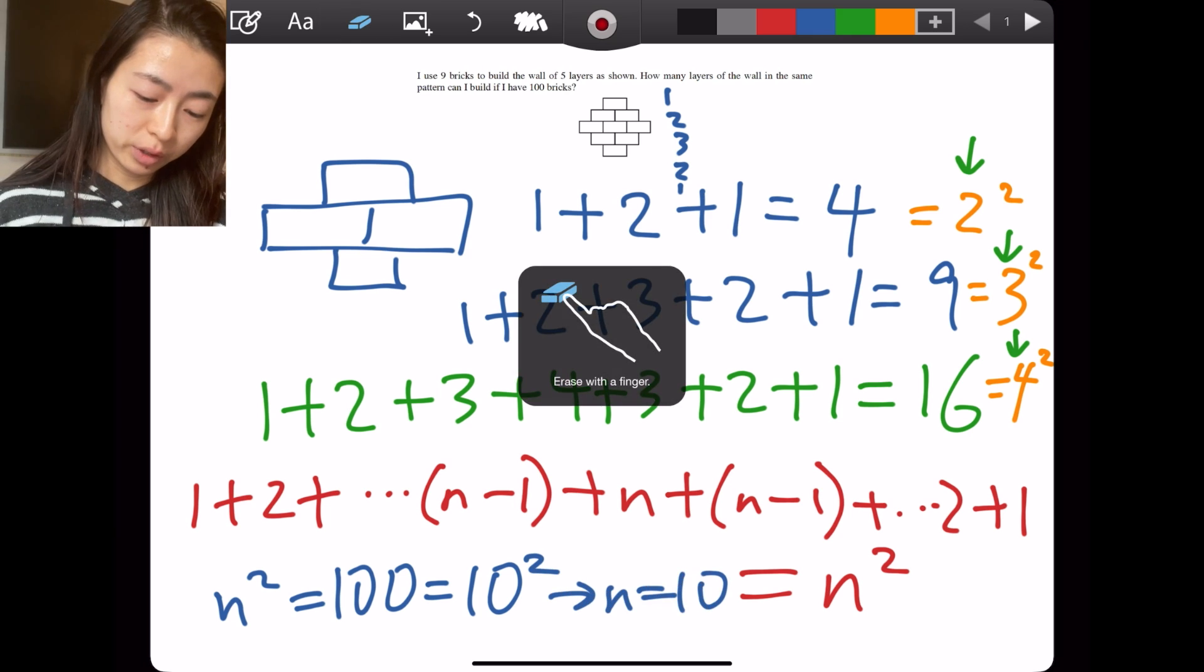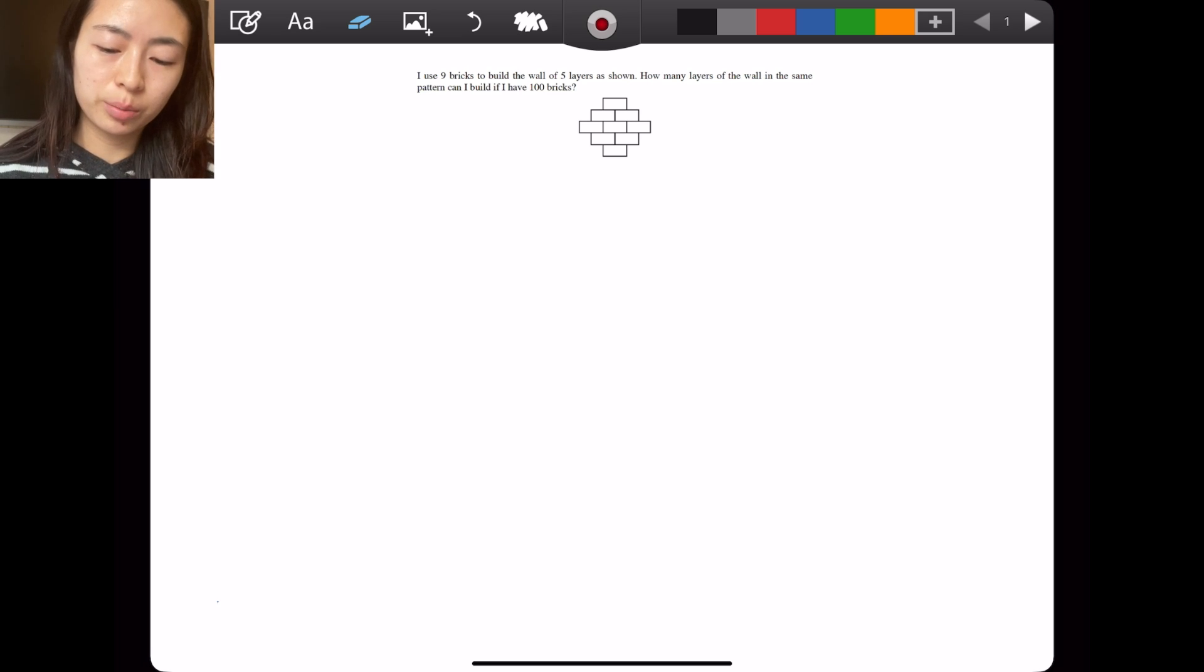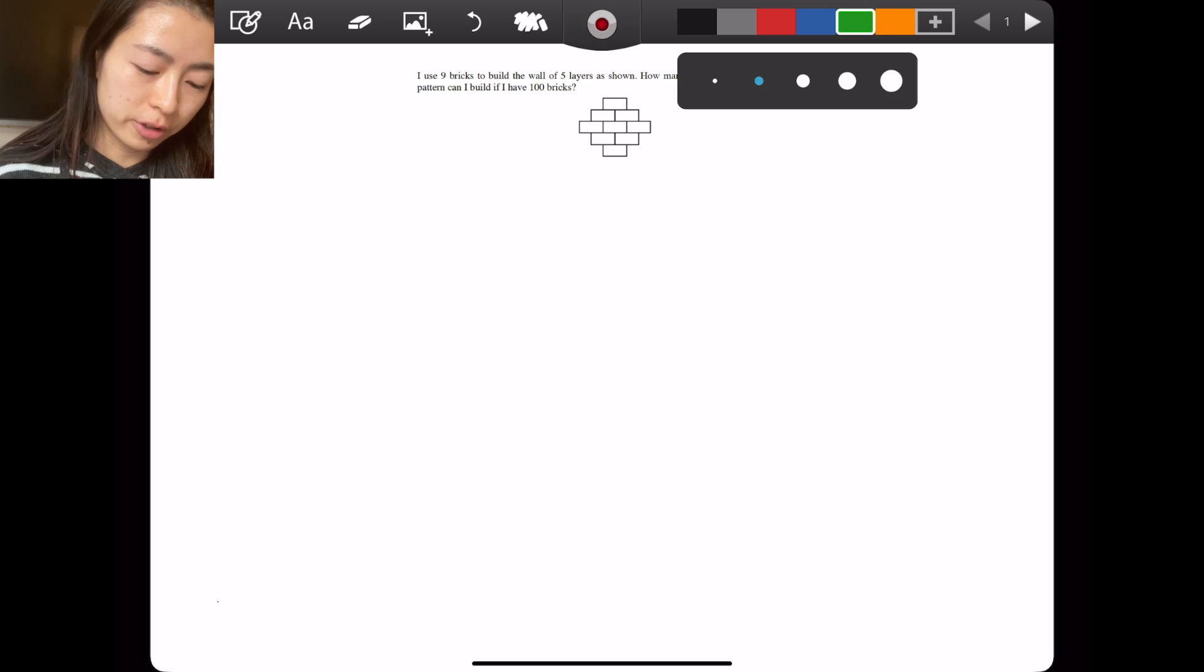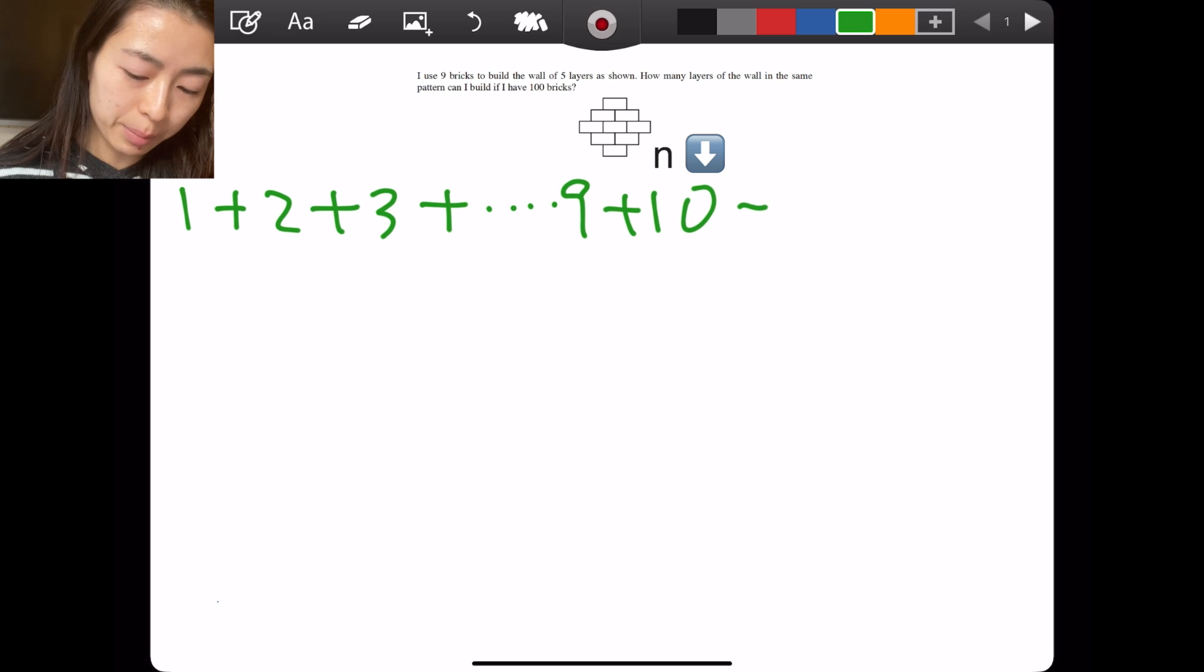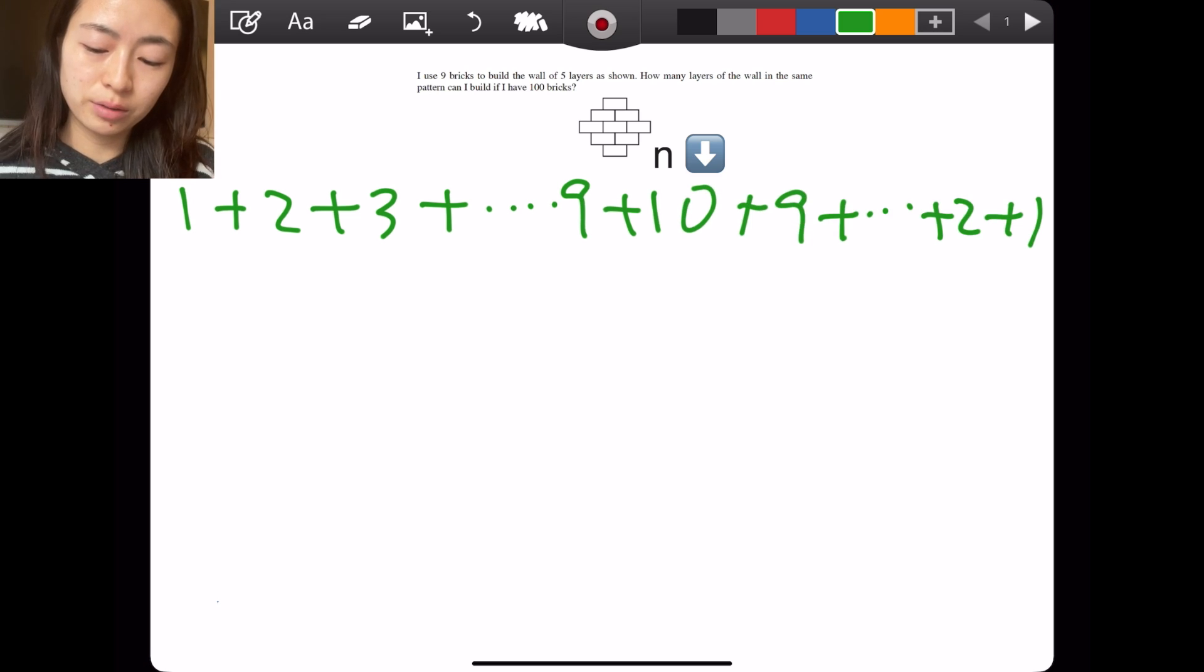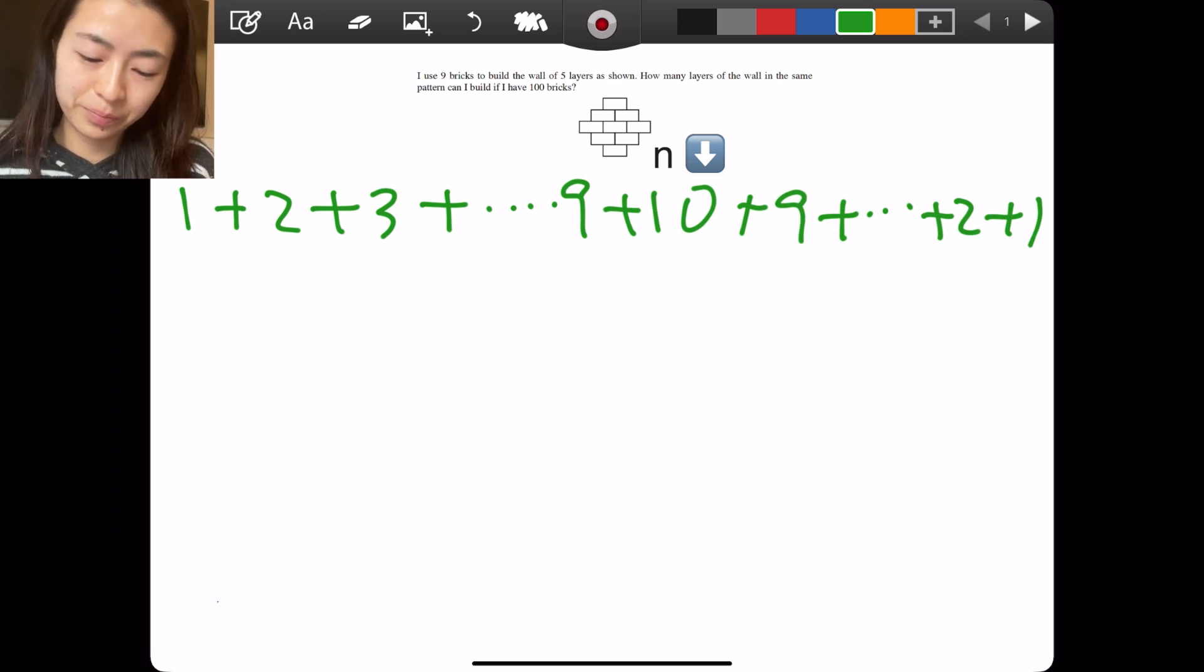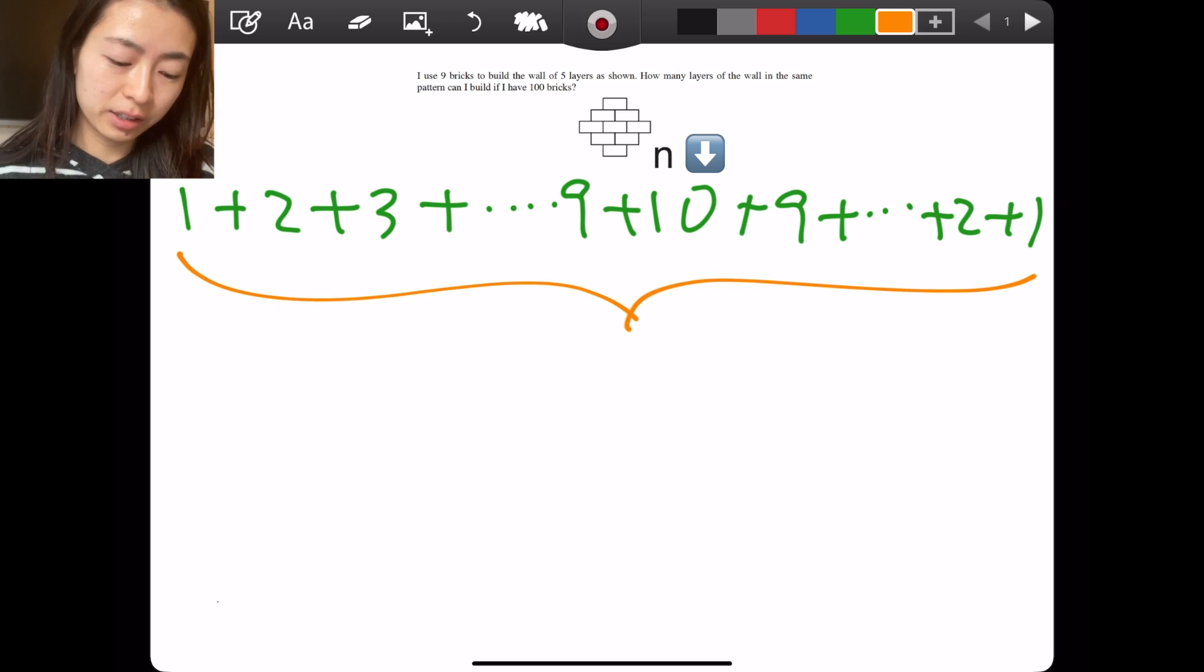I'm going to clear the board real quick. With n = 10, that means our brick wall looked like the following: first layer has one, the second layer has two bricks, three, all the way to nine plus ten - that middle numbers are n - all the way back to two bricks and one brick. The number of layers we have is just how many numbers we have here, because our first layer has one brick, our second layer has two, third layer has three, and our 19th layer has one brick.